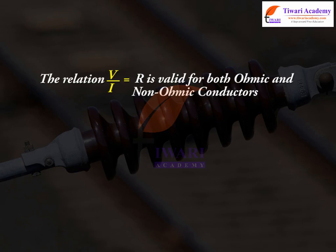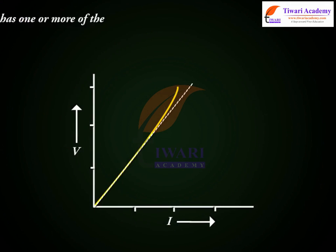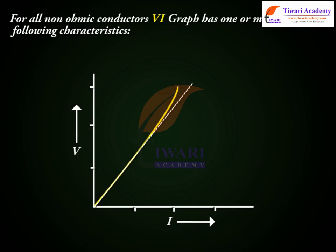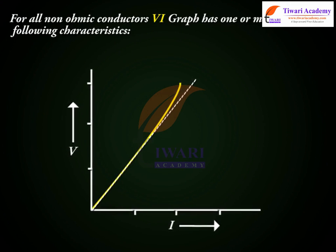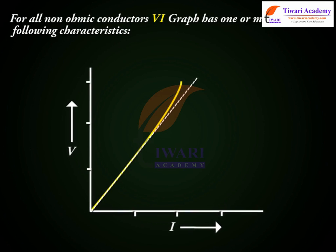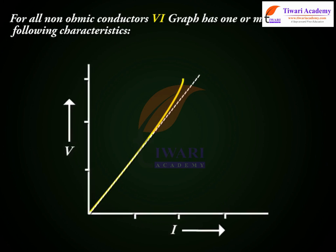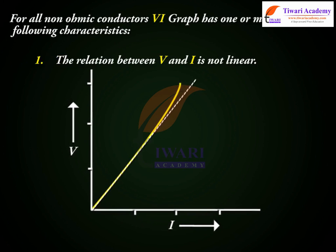The relation V by I is equal to R is valid for both ohmic and non-ohmic conductors. For all non-ohmic conductors, the VI graph has one or more of the following characteristics.